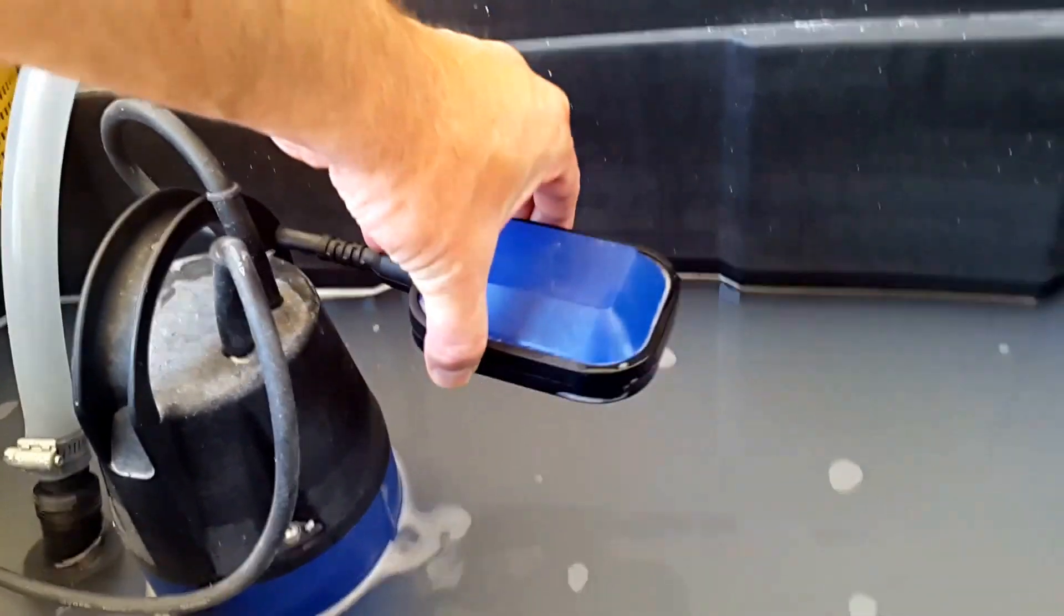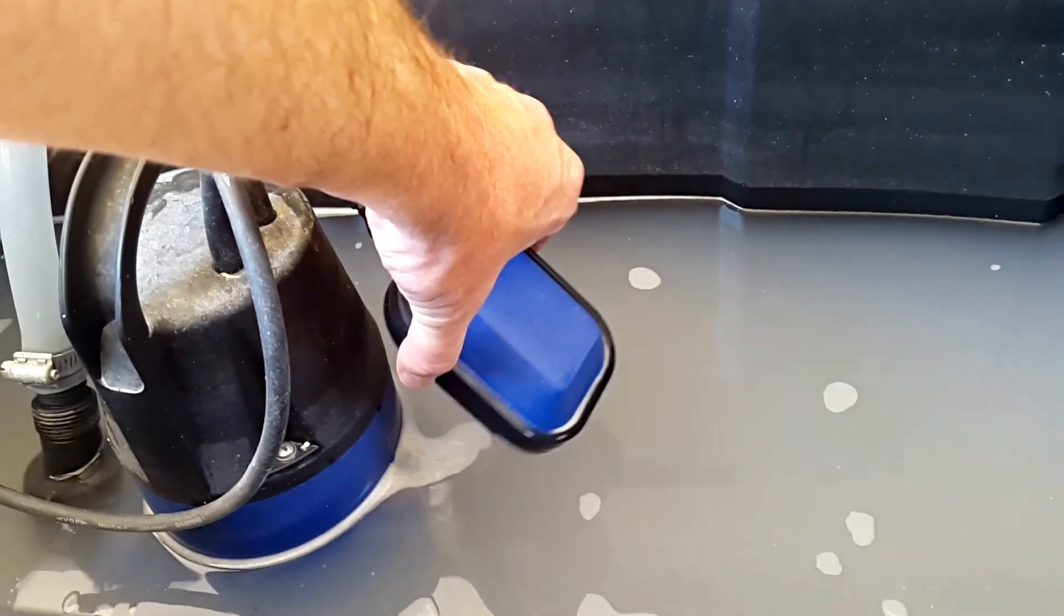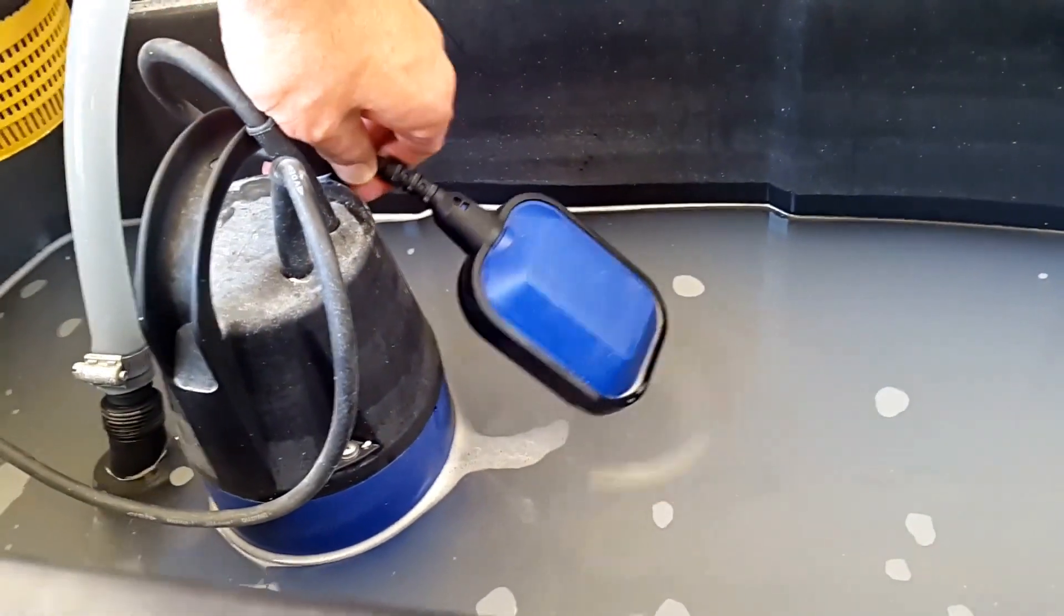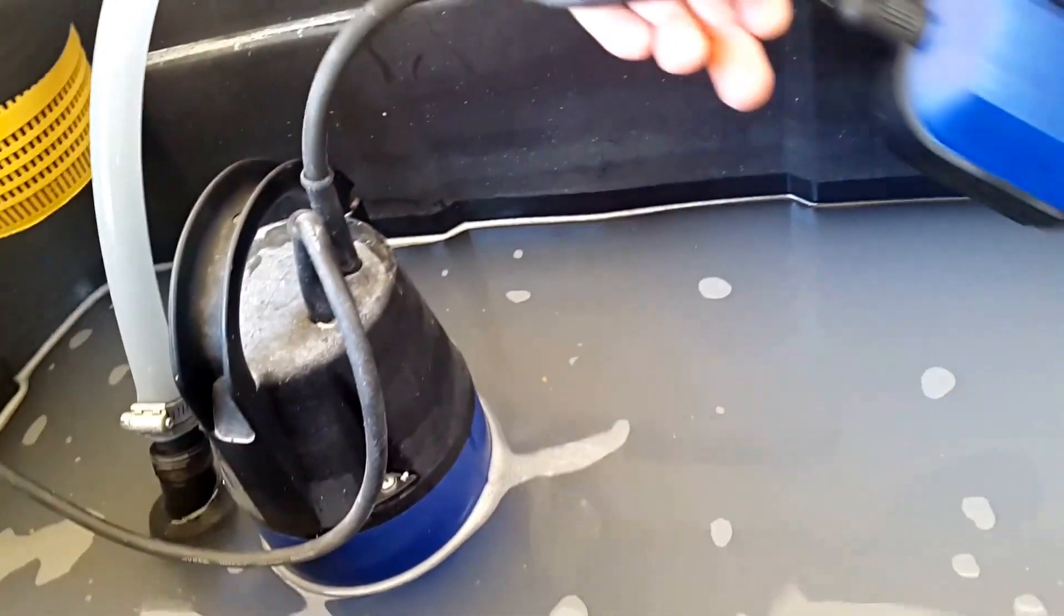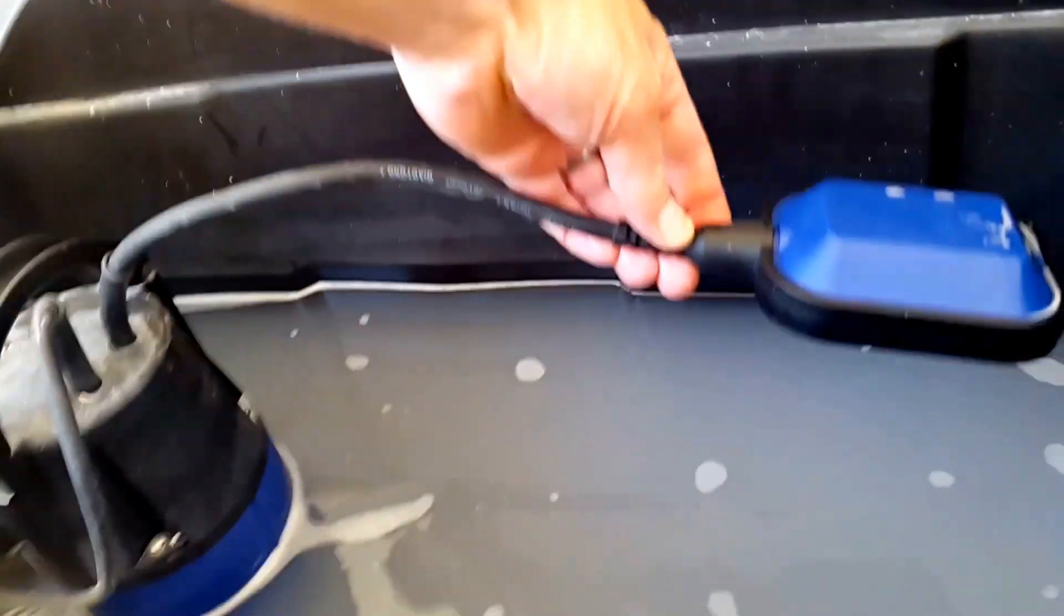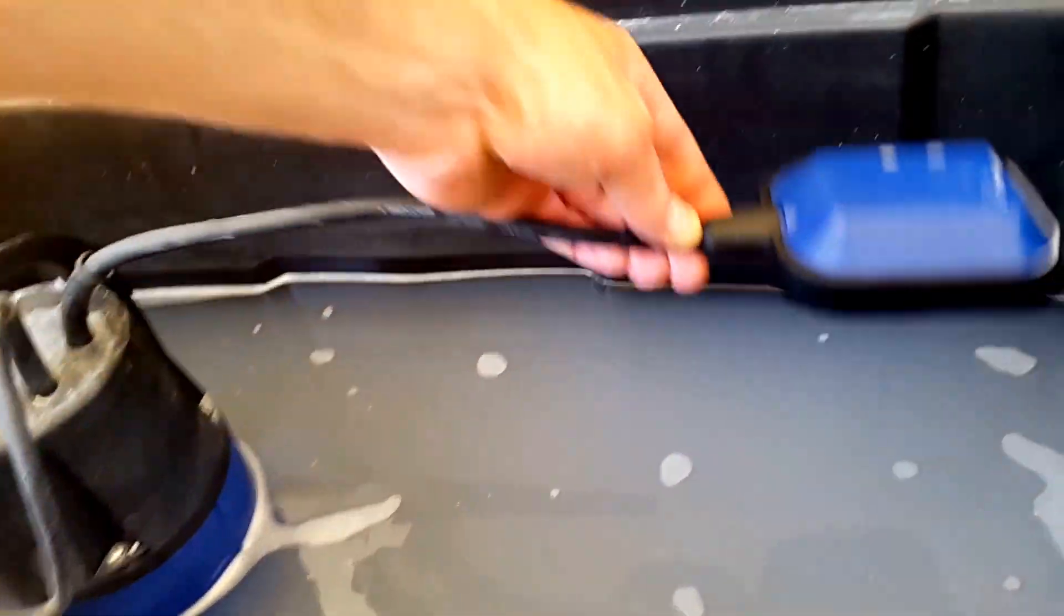this thing, and then as it drops down again it switches the pump off. You can adjust the height at which it switches on and off by adjusting the length of this tether to the pump.